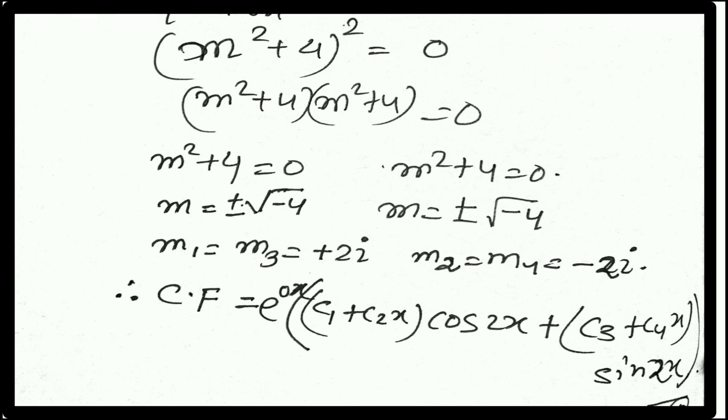But here are two imaginary roots equal. So what do we do? (C₁ + C₂x)cos(2x) + (C₃ + C₄x)sin(2x). Is it clear?